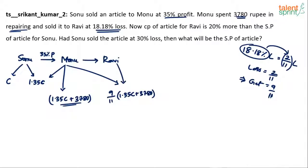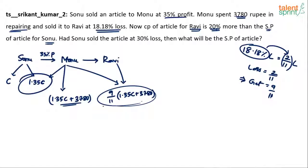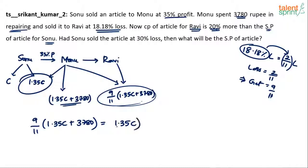Whatever price at which Monu sells to Ravi becomes the price at which Ravi buys from Monu. The cost price of the article for Ravi is 20% more than the selling price of the article for Sonu, which was 1.35C. So Ravi's cost price equals 120% of 1.35C, i.e., 1.2 × 1.35C.